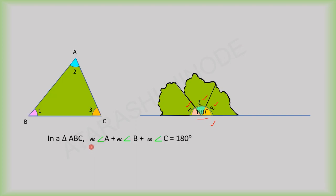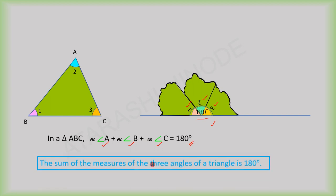So, in this triangle ABC, we get: measure of angle A plus measure of angle B plus measure of angle C equal to 180 degrees. That is, the sum of the measures of the three angles of a triangle is 180 degrees.